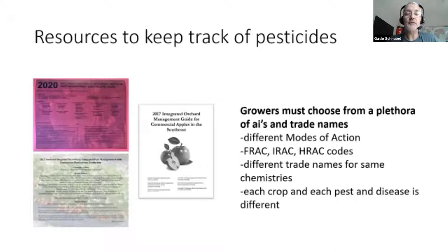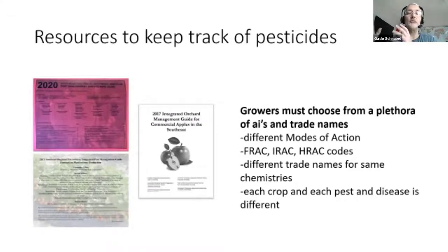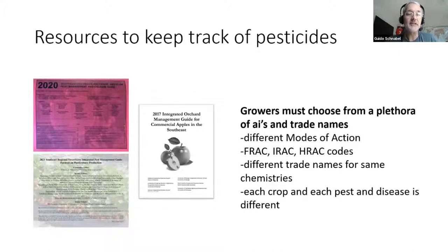So I reviewed what we had. What we all know we have are spray guides — the peach spray guide, the apple spray guides, the small fruit spray guides. They're all structured in different ways. Most of them are structured so that at a certain phenological stage, there's a recommendation for cultural control, biological control, chemical use, and so on. But the growers still have to choose from a plethora of active ingredients and trade names. The FRAC codes and IRAC codes are all listed, but it's not displayed in a way that is easily digestible.